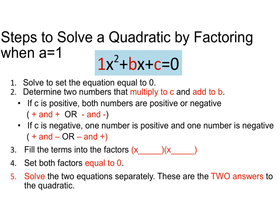First let's review the steps you would have to follow to solve. The first thing you need to do is set the equation equal to zero. Then you are going to determine the two numbers that multiply to C and add to B. If C is positive the numbers have the same sign; if C is negative they have different signs. Then fill the terms into the factors, set both factors equal to zero, and solve the two equations separately, giving you two answers.